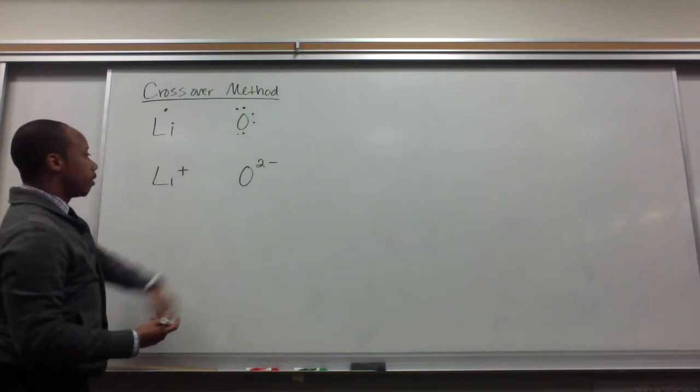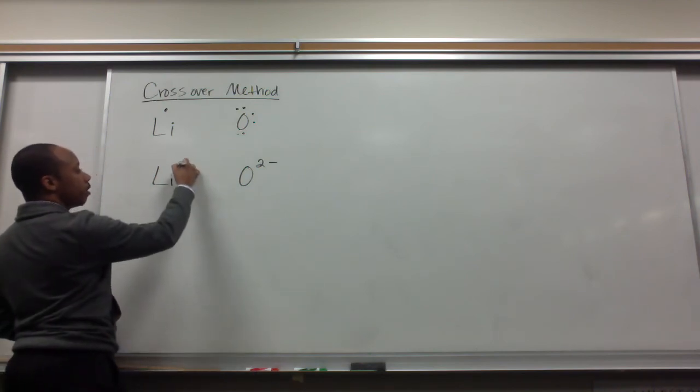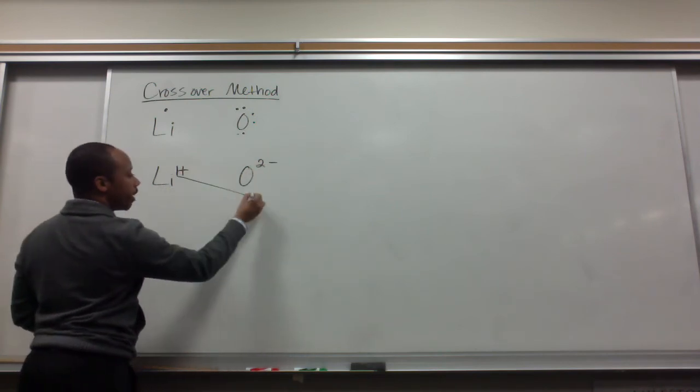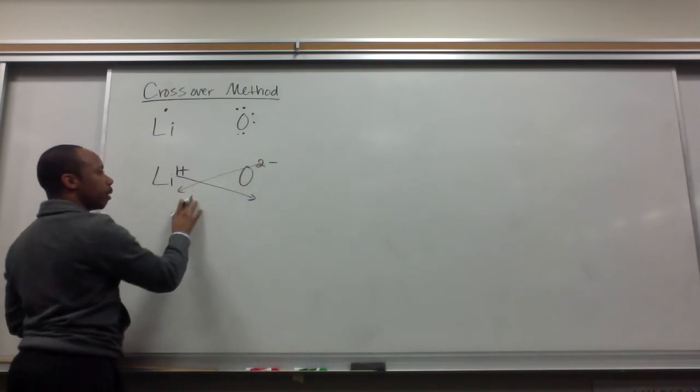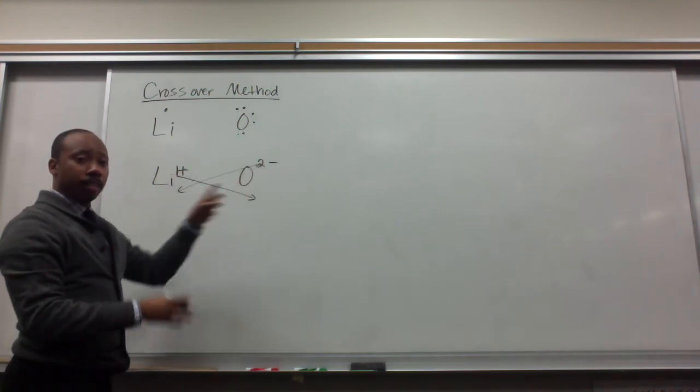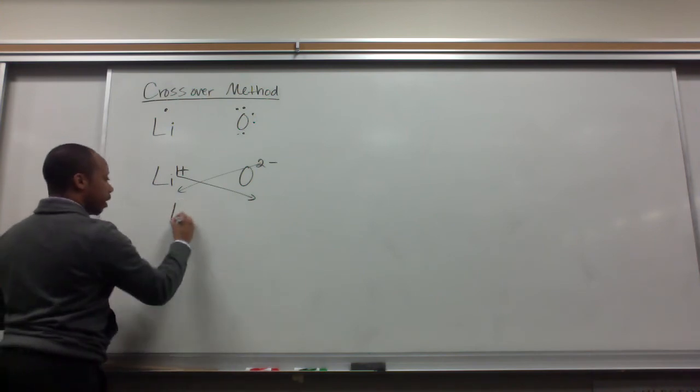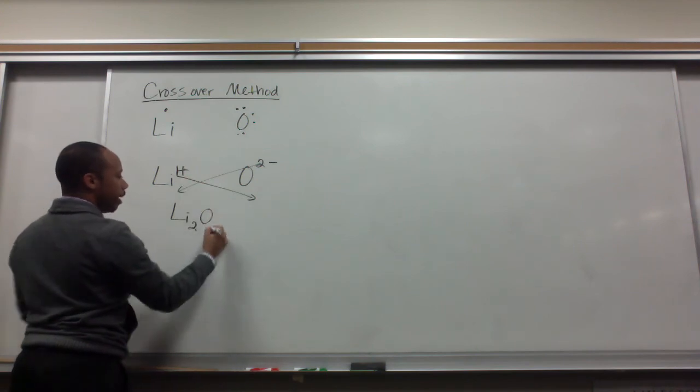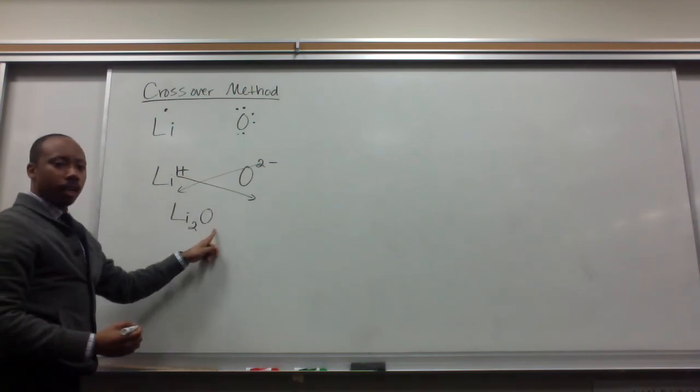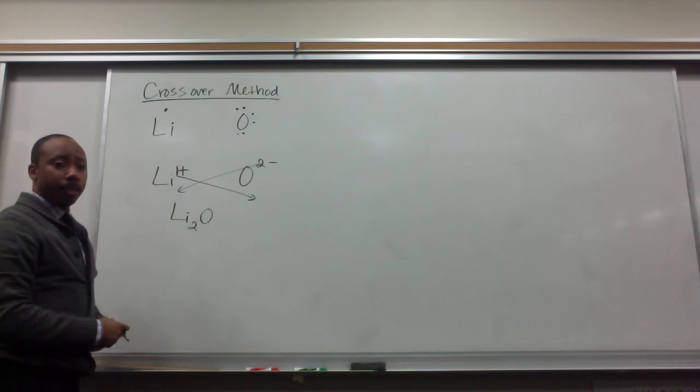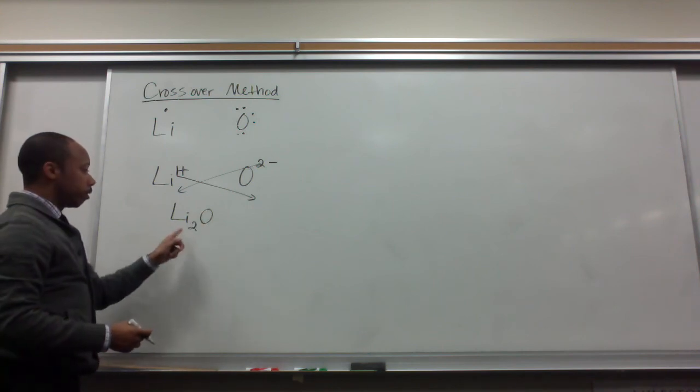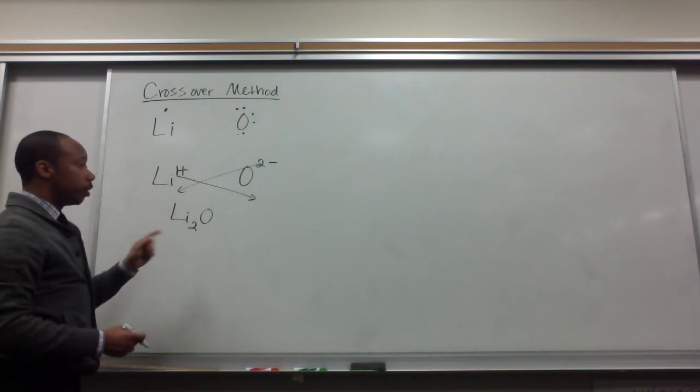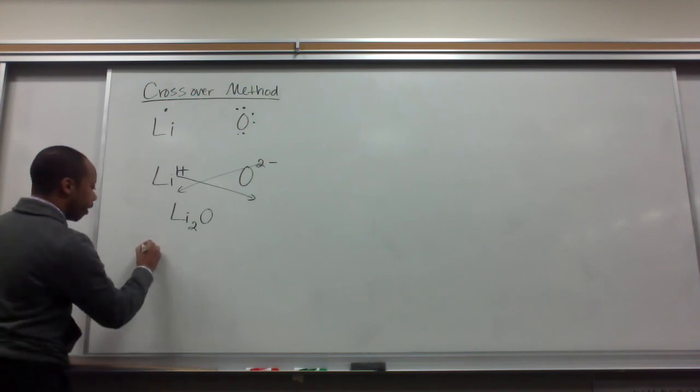Now the crossover method says if I take my invisible number here, one, and that two, and I cross that one down to the oxygen here and that two down to the lithium—I don't bring the charges with them, I don't bring the plus and the minus, just the numbers—I get Li2 here and this oxygen is one. In chemistry, we don't write the one. It's understood to be one because there's only one atom here. This formula matches the formula we just did on the other board. This is a very simple way to do that, and we can name it in the same way: it is lithium oxide.